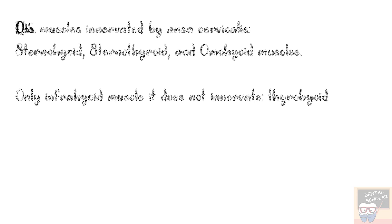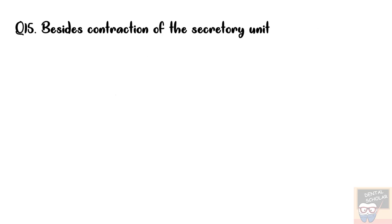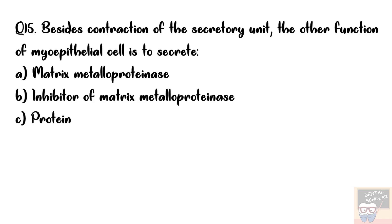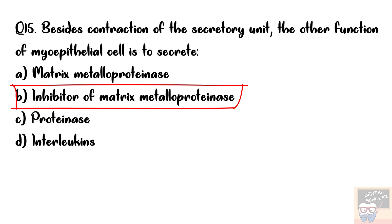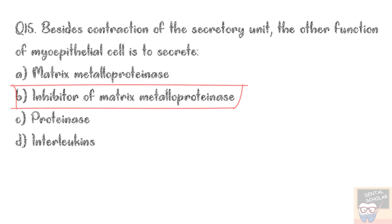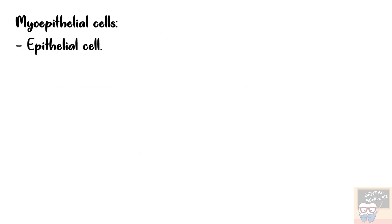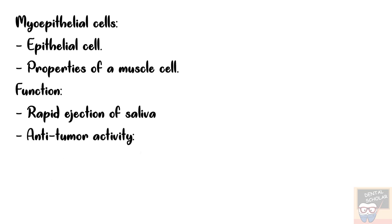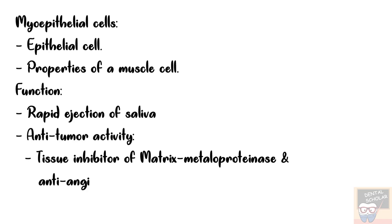Question number 15: Besides contraction of the secretory unit, the other function of myoepithelial cells is to secrete — options are matrix metalloproteinase, inhibitor of matrix metalloproteinase, proteinase, and interleukins. The answer is option B, inhibitor of matrix metalloproteinase. Myoepithelial cells are epithelial cells with contractile ability. Their functions include rapid ejection of saliva from secretory units and intercalated ducts, anti-tumor activity by secreting tissue inhibitor of matrix metalloproteinase and anti-angiogenesis factor, and acting as a physical barrier to infiltration of neoplastic cells.